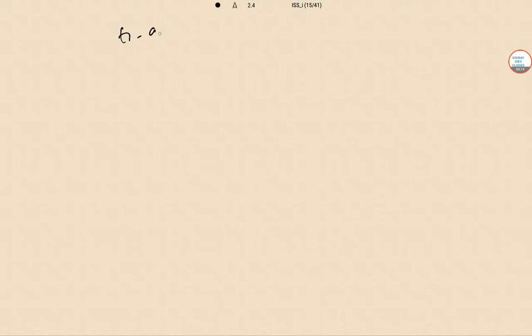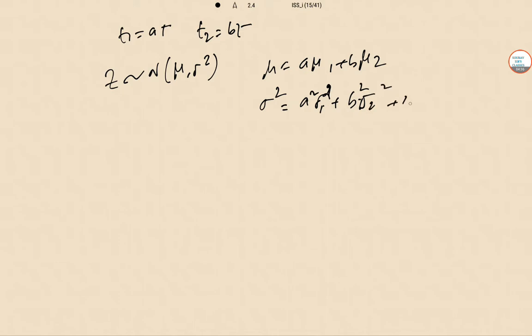At T1 equal to A T and T2 equal to B T. We have Z is a normal mu and sigma square, where mu equal to A mu 1 and B mu 2. A square sigma 1 square, B square sigma 2 square, 2 rho, A, B, sigma 1, sigma 2. So obviously, statement 1 is correct.